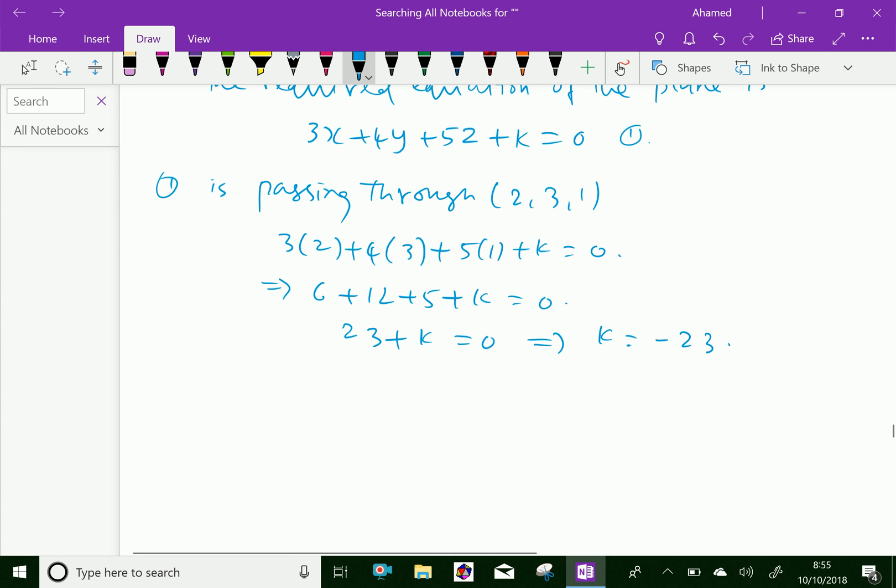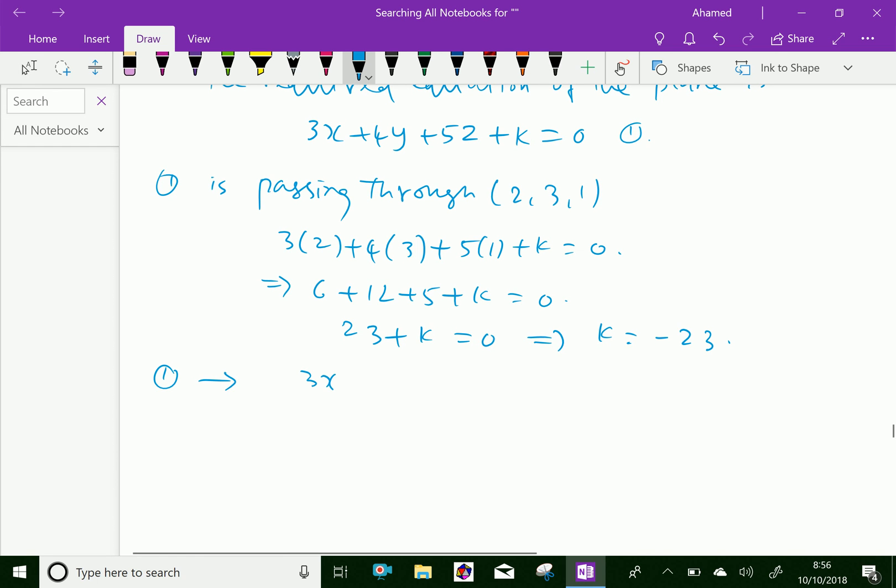So we have to substitute the value of k as minus 23 in the required equation. That is, 3x plus 4y plus 5z, instead of k, we have to substitute minus 23 equals 0.